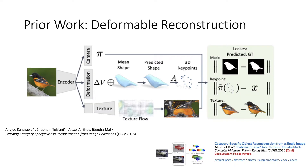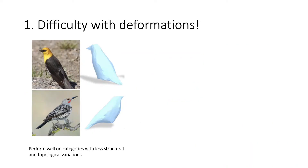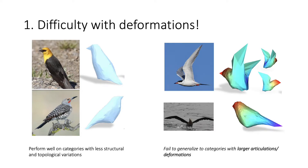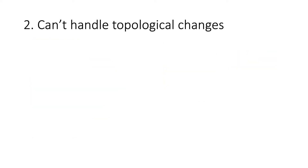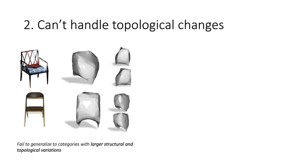The closest prior work to ours, which models both 3D geometry and correspondences, is the seminal CMR work. To generate an instance-specific shape, CMR deforms a category-specific mean mesh where both the deformations and the mean mesh are learned jointly. While CMR really works well on objects with limited deformations, being a mesh-based approach, it's not good on objects with larger articulations. More importantly, it's restricted to object categories with limited structural and topological variations.